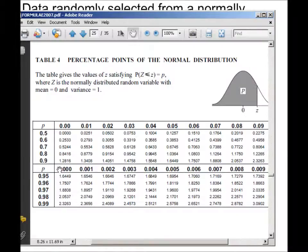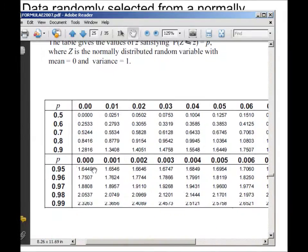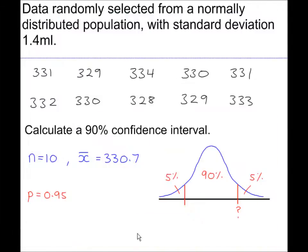From this you can work out the Z values that go on the horizontal axis. So Z is 1.6449, which gives you plus or minus 1.6449, because of the symmetry of the distribution. And Z equals 0 goes in the centre. All of these are Z values.